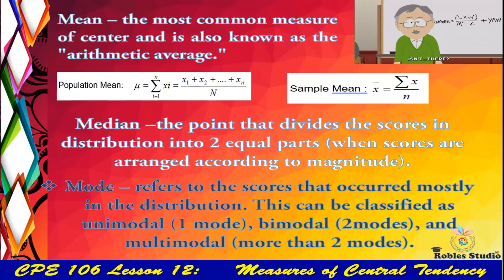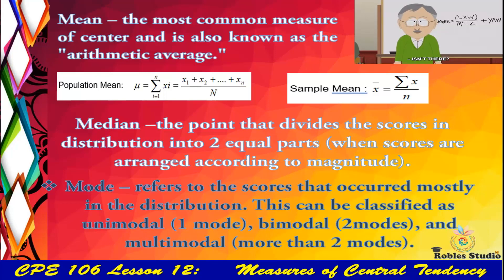Mode refers to the scores that occurred most frequently in the distribution. This can be classified as unimodal for one mode, bimodal for two modes, and multimodal for more than two modes.